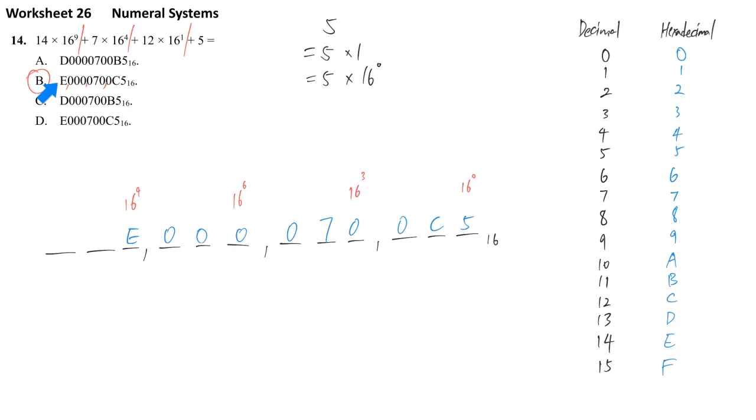To identify it, first whenever you find 14, you know that 14 is represented by E but not D. So you know that A and C are not the answer. And then if you know power of 9, we are talking about in total 10 digits. So option D is too short, only 8 or 9 digits in total. That's why this one is wrong.